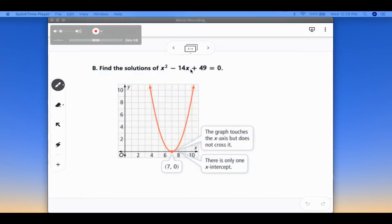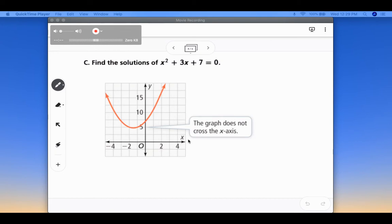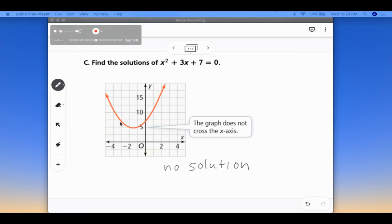The next example, we have x² - 14x + 49. So you can see this graph only touches the x-axis at one point, which is the point (7,0). So we would say that this graph or this equation has one solution and there's only one x-intercept. And then this graph, you'll see, doesn't cross the x-axis at all. So this would be a situation where we would say no solution. And when you get into algebra 2, we'll talk about kind of how we deal with numbers to create quadratics that do not have an x-intercept.